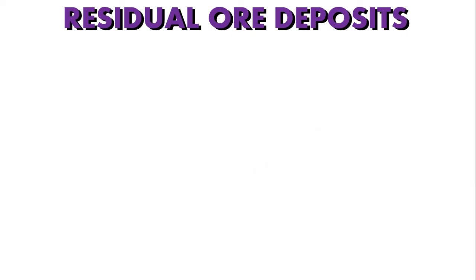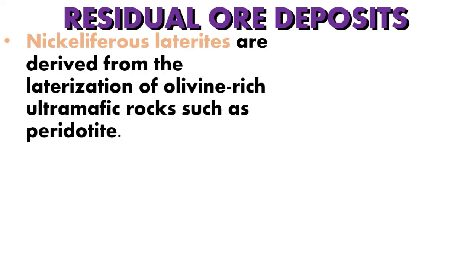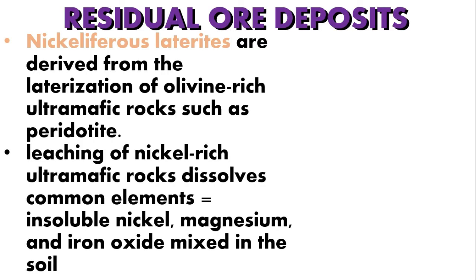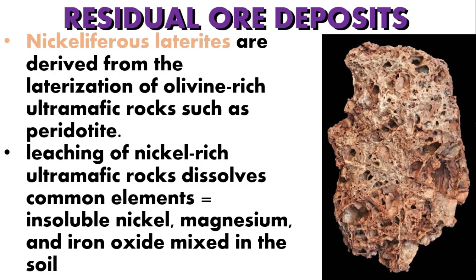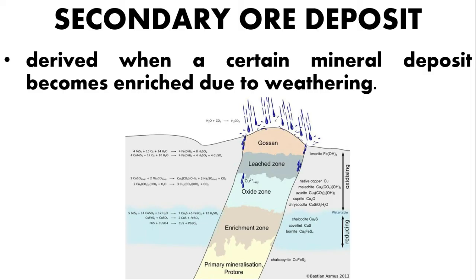For nickeliferous laterites or nickel laterites, these are residual ore deposits derived from the laterization of olivine-rich ultramafic rocks such as peridotite. Laterization is the condition of weathering which leads to the removal of alkalis and silica, resulting in a soil or rock with high concentrations of iron and aluminum oxides. Like in the formation of bauxite, the leaching of nickel-rich ultramafic rocks dissolves common elements, leaving insoluble nickel, magnesium, and iron oxide mixed in the soil. In addition, an existing mineral deposit can be turned into a more highly concentrated mineral deposit by weathering in a process called secondary enrichment. If a mineral undergoes secondary enrichment, it will produce a secondary ore deposit.